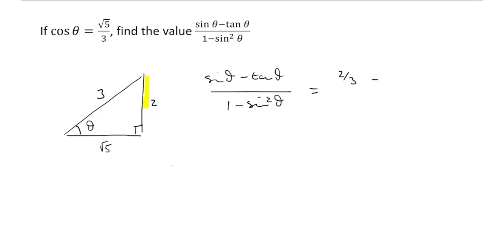What's tan theta? Tan theta is opposite 2 over the adjacent, root 5. We've got 2 upon root 5. Sin squared theta? Well, we know that sin theta is 2 thirds. So sin squared theta is going to be 2 thirds squared.